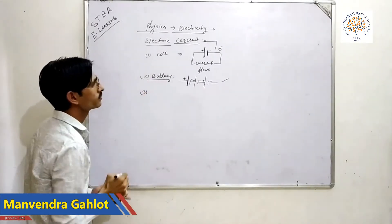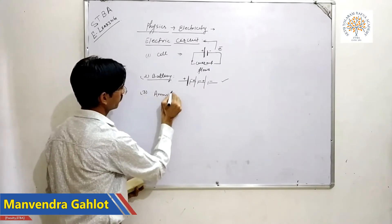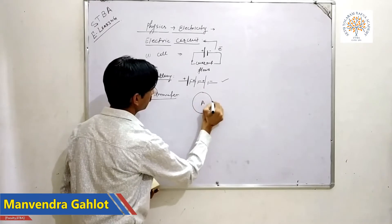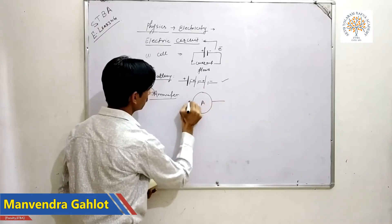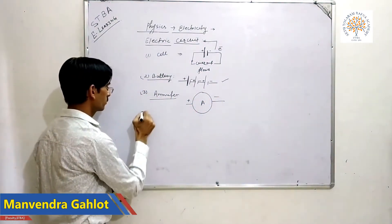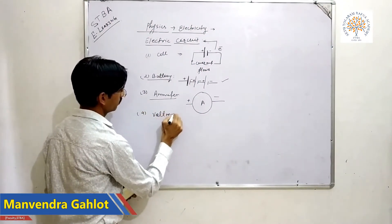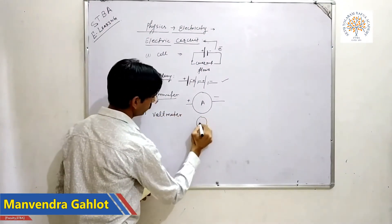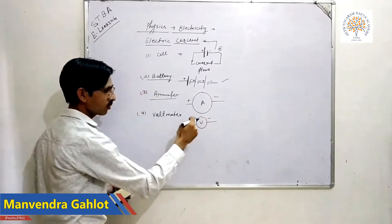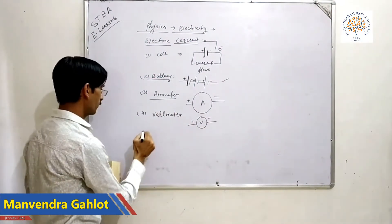Third symbol: ammeter. This is the symbol of an ammeter, with a positive terminal and a negative terminal. Fourth: voltmeter — symbol V — also with a positive terminal and a negative terminal.